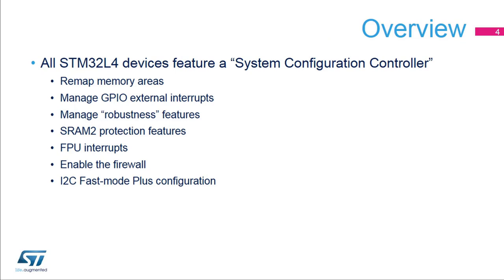STM32L4 devices feature a set of configuration registers. The system configuration controller gives access to the following features: remapping memory areas to address zero; managing the external interrupt line connection to the GPIOs; certain robustness features; SRAM2 write protection and erase; floating point unit interrupts; firewall control; and finally, the configuration of the 20mA high drive IOs used for I2C Fast Mode Plus.